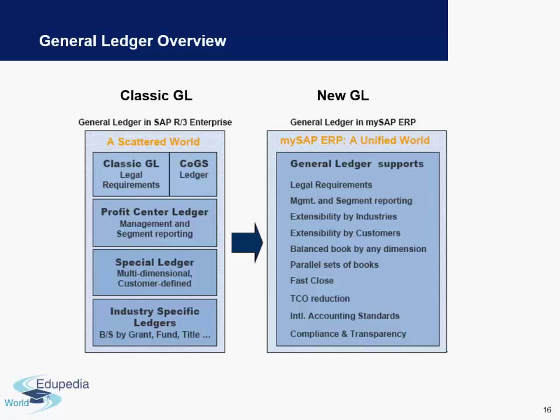Classic GL is basically a scattered world — you have different ledgers for every different requirement. Legal requirements have a different ledger; management and segment reporting is done under the profit center ledger, and so forth. On the other hand, New GL covers all subtopics under GL in one place: legal requirements, management and segment reporting, industry segmentation, customer segmentation, parallel sets of books, compliance-related accounts, and international accounting standards like IFRS and US GAAP are all covered under New GL. New GL gives you a very exhaustive view against every expense or account you have in SAP Finance.